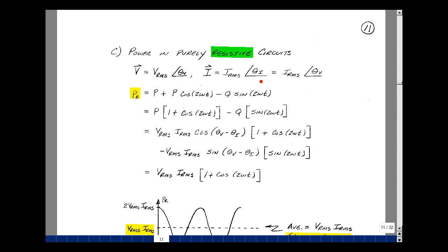So the angle of θ sub i is the same as the angle of θ sub v. If we go back to page 2 of this chapter, our definition of power absorbed in general was p plus p cosine of 2ωt minus q times the sine of 2ωt. We could pull out a p here and have 1 plus the cosine of 2ωt.